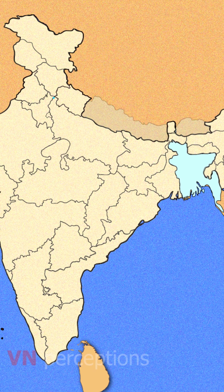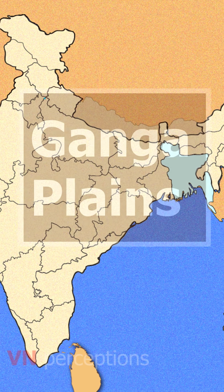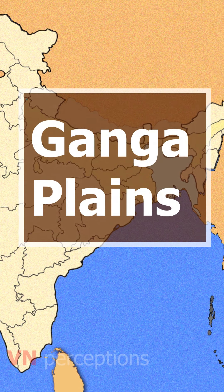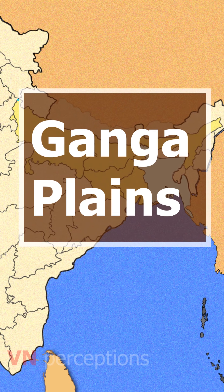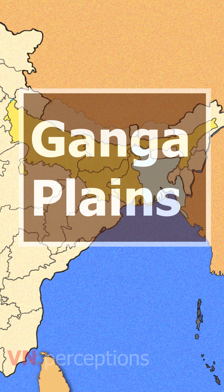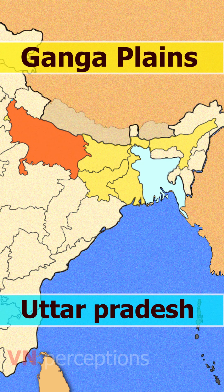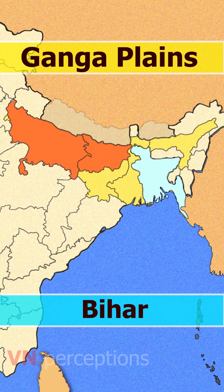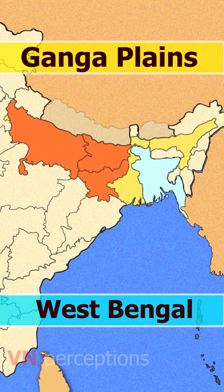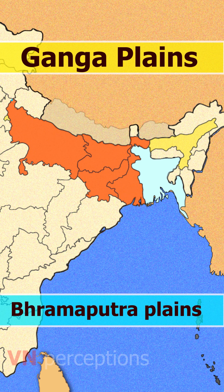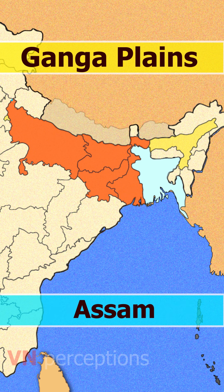In this chapter, we shall learn the geography of the Ganga Plains. The Ganga Plains are covered by the states of Uttar Pradesh, Bihar, West Bengal and the Brahmaputra Plains of Assam. However, geomorphologically or physically, Uttar Pradesh can be divided into three major topographical regions.